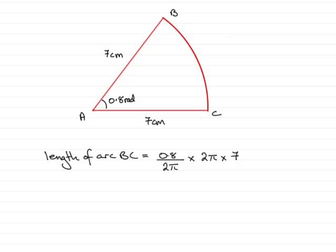So in this question you'll notice that the 2π's cancel and you get the result that is the angle times the radius.